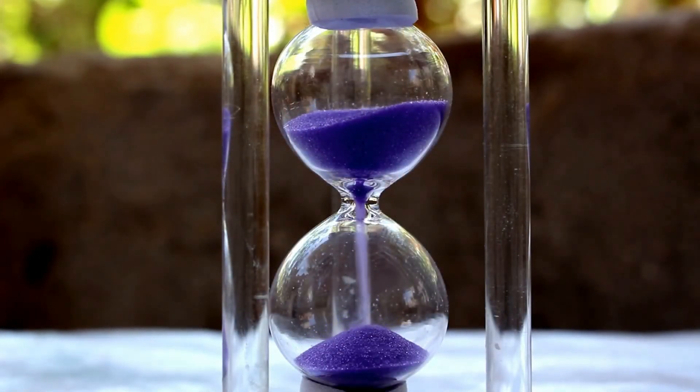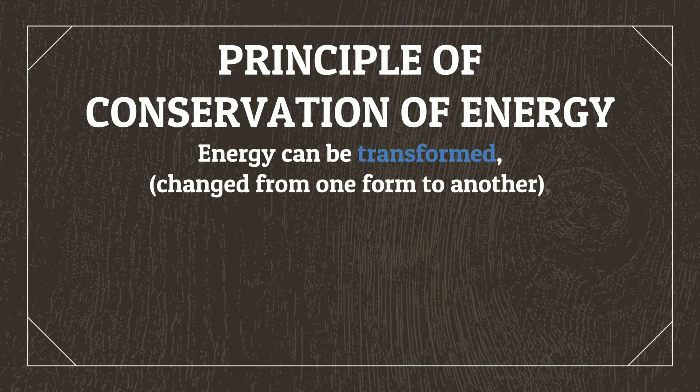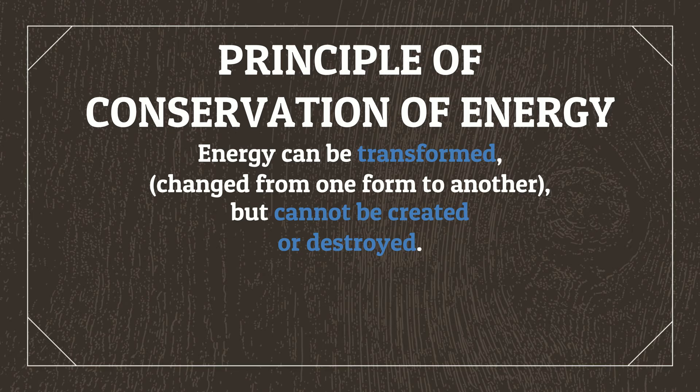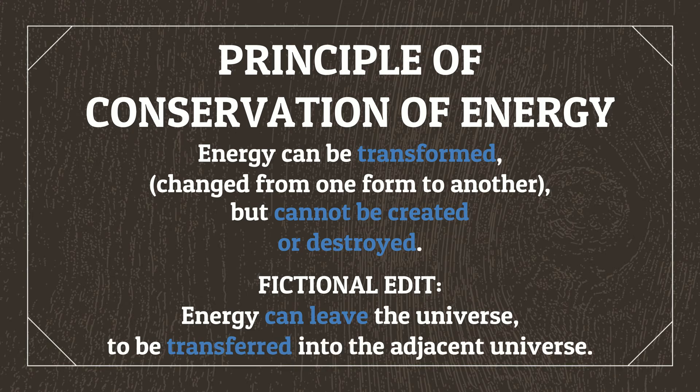If you're wanting a universe where time travel is possible and you want it to make sense, you're probably going to want to establish rules here around how it works. For the universe I'll be making as we go through this series, I'm going to use real-life universal laws, but with a single adjustment to the first law of thermodynamics. The first law includes the principle of conservation of energy, which states that energy can be transformed — changed from one form to another — but it cannot be created or destroyed. This is still going to be true in our fictional universe, but we're also going to stipulate that energy can leave the universe to be transferred into the adjacent universe we created earlier.